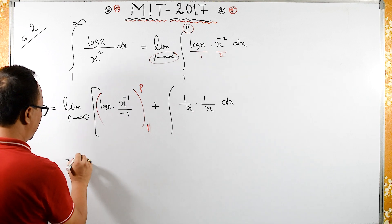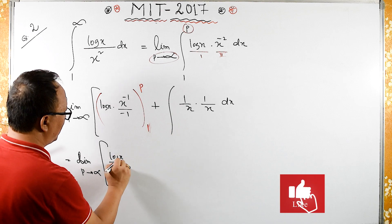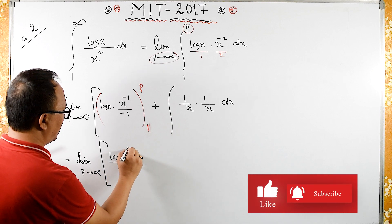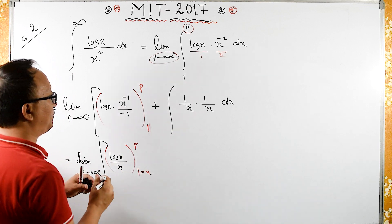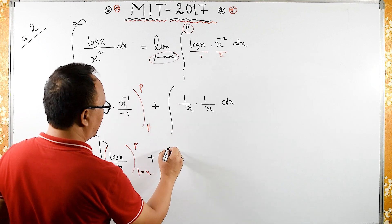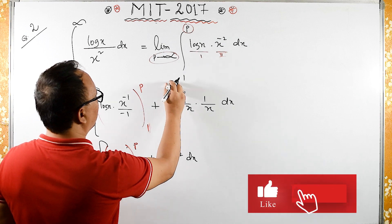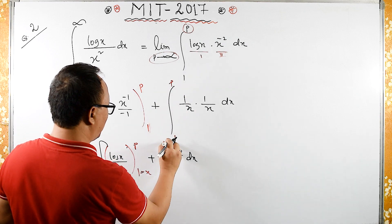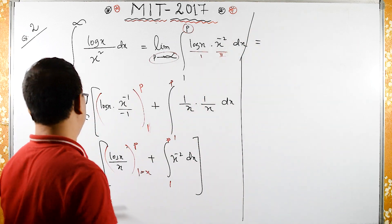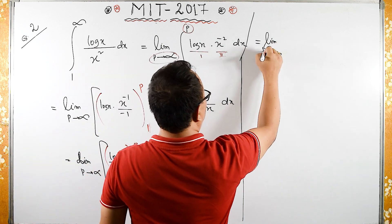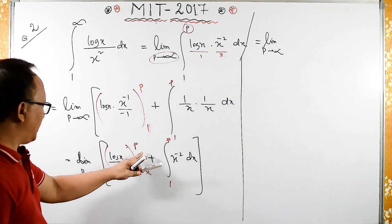So this becomes the limit as p tends to infinity of log(x)/x evaluated from 1 to p, plus the integral of x⁻² dx from 1 to p.